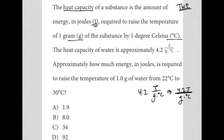The question asks: approximately how much energy in joules is required to raise the temperature of one gram of water from 22 degrees Celsius to 30 degrees Celsius? To go from 22 to 30 is an increase of 8 degrees Celsius.